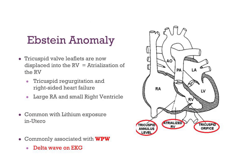Ebstein's Anomaly occurs in kids born to mothers taking lithium — lithium can cause hypothyroidism and Ebstein's Anomaly. In Ebstein's Anomaly, the tricuspid valve leaflets are displaced downward into the right ventricle — this is called atrialization of the right ventricle. You can get tricuspid regurgitation, right heart failure, an enlarged right atrium, and a small right ventricle. This is also associated with Wolff-Parkinson-White syndrome, so you'll see a delta wave on EKG.